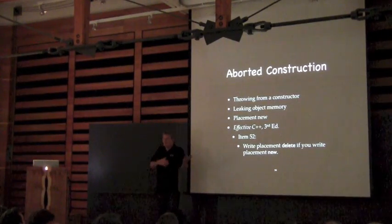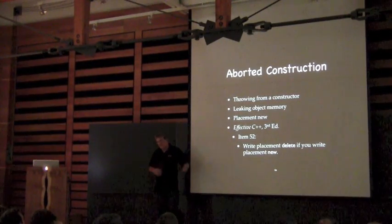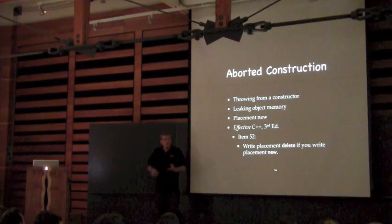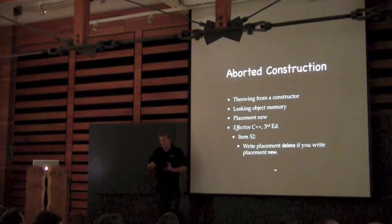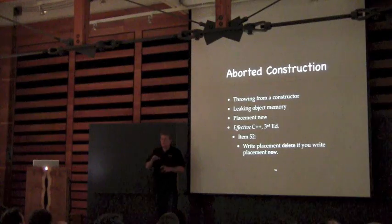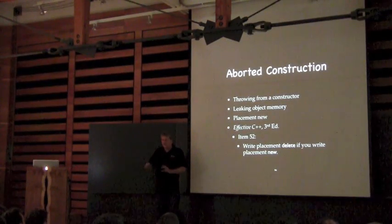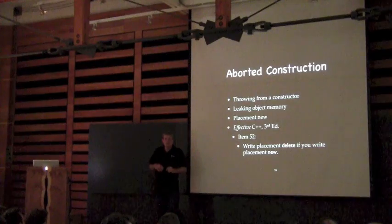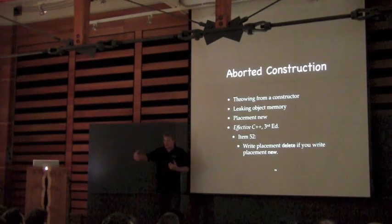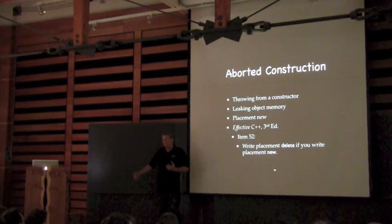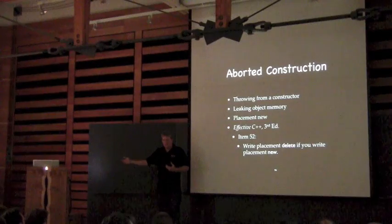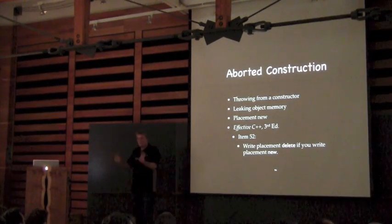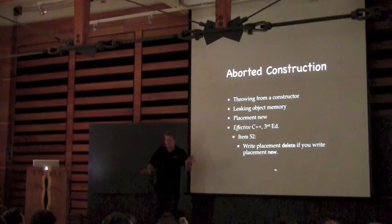So I told my coworker who was responsible for fixing the bug: here's the deal, we just need to write a placement delete — just take these same parameters. They're not actually going to pass you any meaningful data, just ignore the parameters, that's just to find the right function. Inside there, just call delete. Everything is good. He fixes it, tests it, everything's working, nothing leaks.